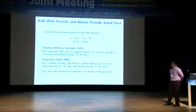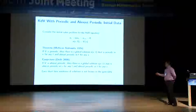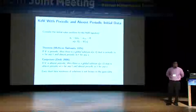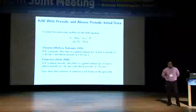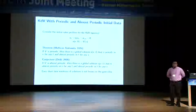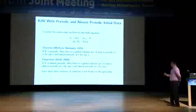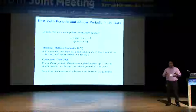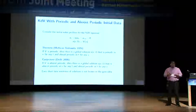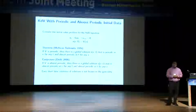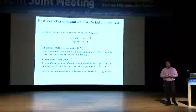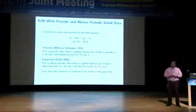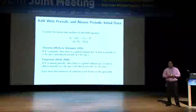Already the very first question — whether you have local existence — is not known in this generality. This talk is about the Deift conjecture: KDV equation with almost periodic initial data. The goal is to show global existence, a uniqueness statement of a certain kind, and that the behavior is almost periodic in space and time.